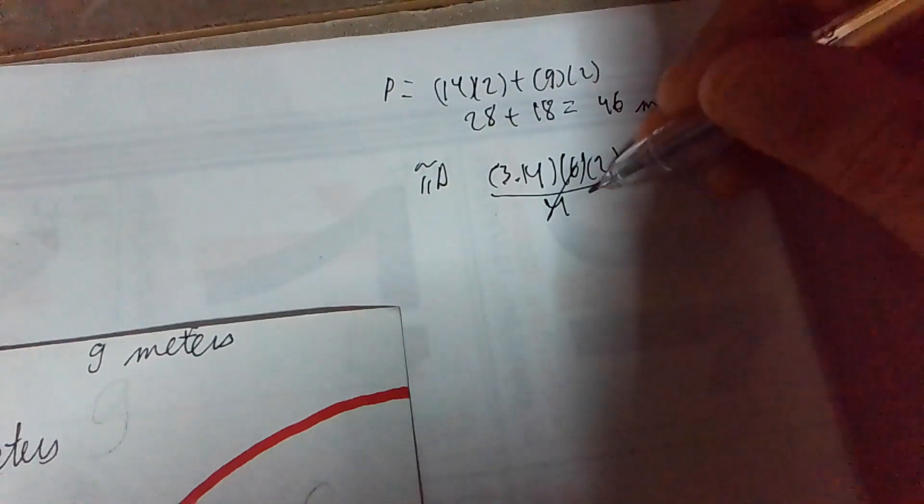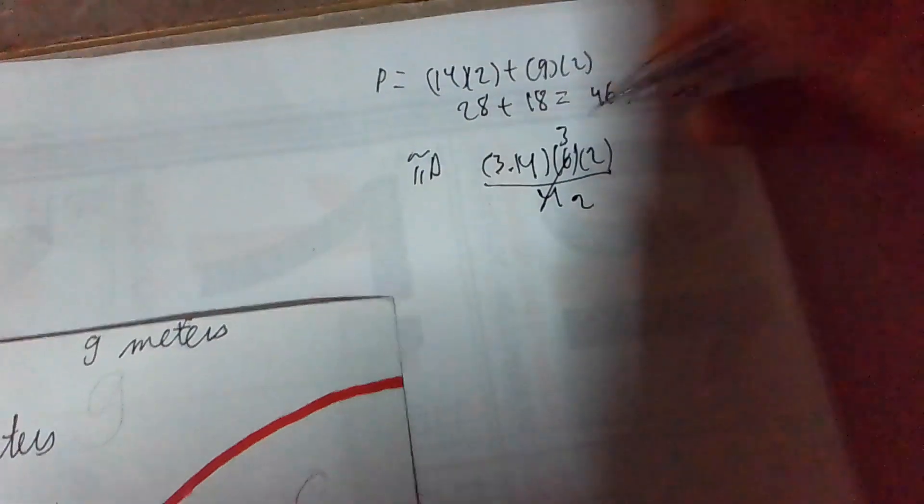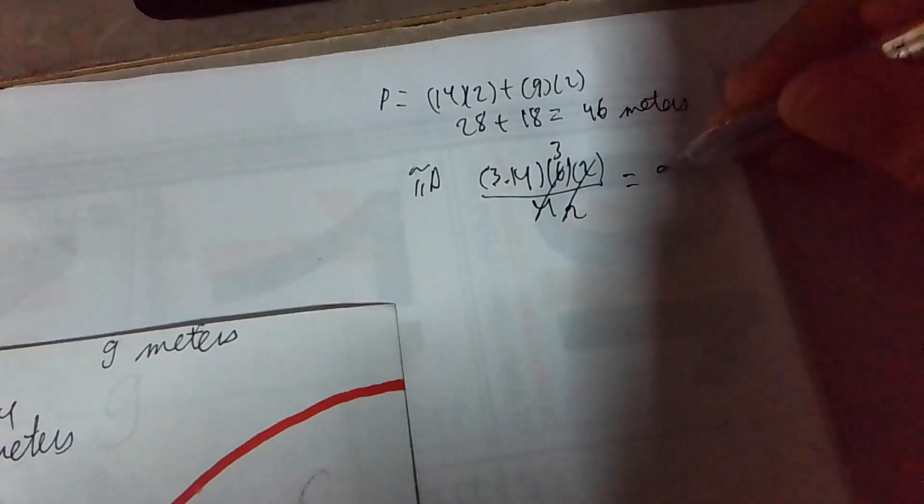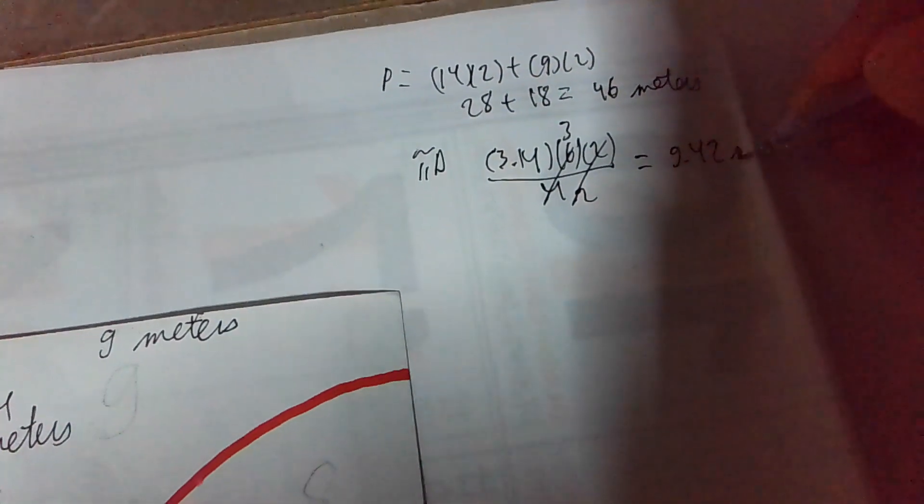Therefore, 3.14 times 6 times 2, divide by 4. We can simplify 4 and 6, which makes it 2 and 3. We can also simplify the 2s, which makes it 3.14 times 3, which gives you 9.42 meters.